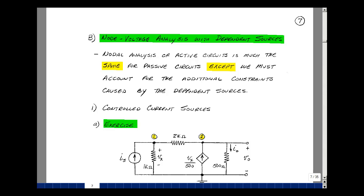This lesson deals with node voltage analysis with dependent sources. You can find these notes in the ECE-201 e-book in Chapter 4, starting on page 7.